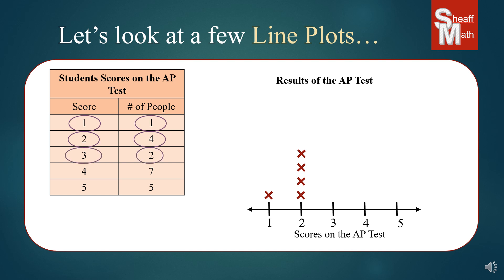Then we have a score of three and two people got that. A score of four had seven, and then a score of five had five. So you might wonder why it's called a line plot — the X's form lines, and when you're visually looking at this data you can see which categories have the most and which have the least by that line of X's.